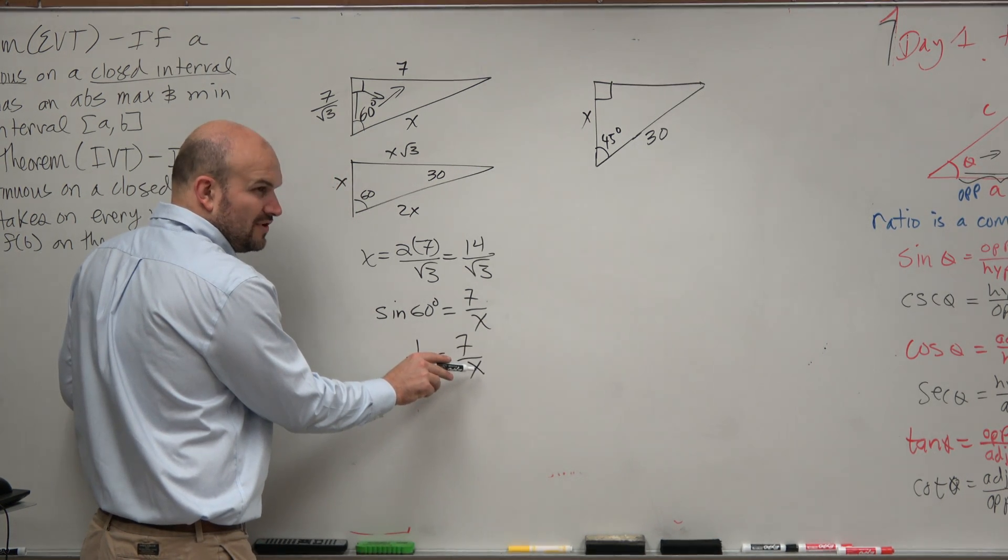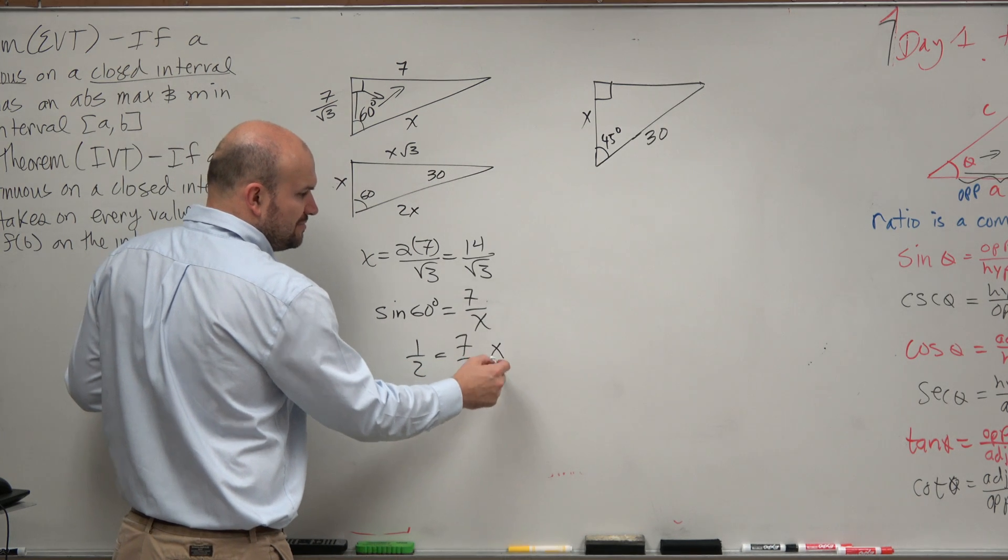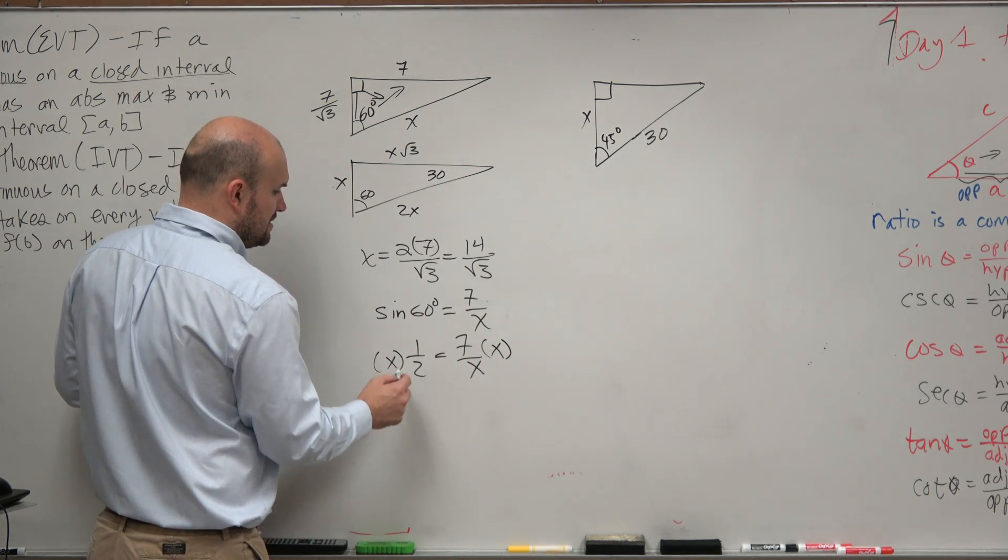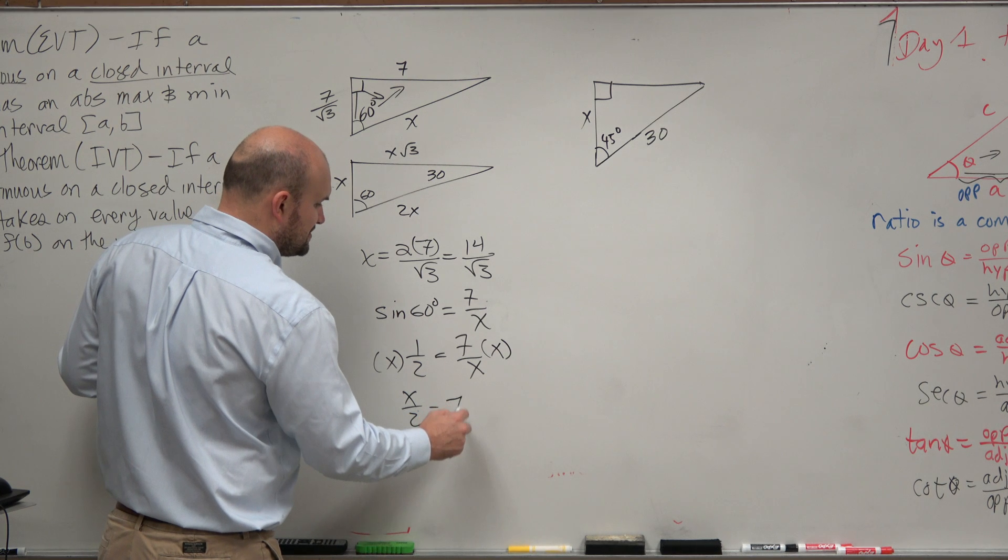So I can just replace 60 degrees with 1 half equals 7 over x. Now, again, how do we solve for x? We can't solve for x in the denominator. We'd have to multiply by x on both sides. So therefore, we'd have x over 2 is equal to 7.